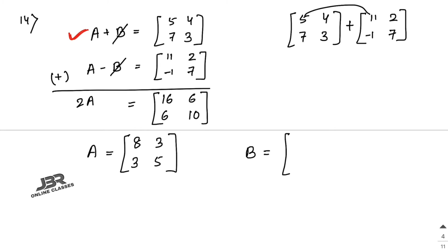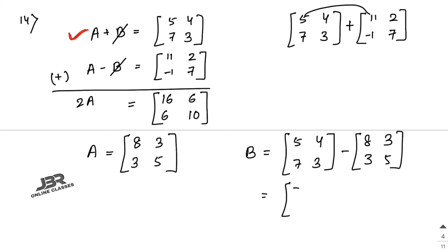Now find B using A+B = [5, 4; 7, 3], so B = [5, 4; 7, 3] minus A = [5-8, 4-3; 7-3, 3-5] = [-3, 1; 4, -2]. So A = [8, 3; 3, 5] and B = [-3, 1; 4, -2]. That is your answer.